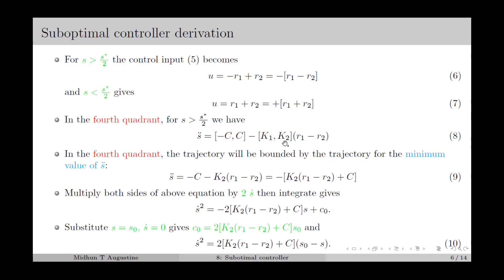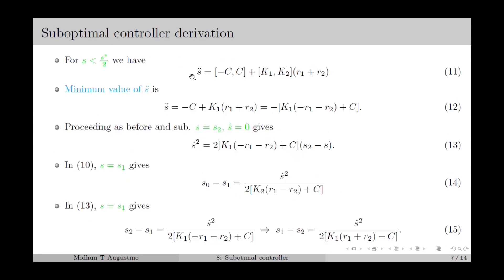Here C, K1, and K2 are the bounds of the uncertainties as defined in the previous lecture. Multiplying both sides of this equation by 2·s-dot and integrating and rearranging, we obtain s-dot-squared as in equation number 10. For S less than S-star over 2, s-double-dot is as in equation number 11, and the state trajectory is bounded by the minimum value of s-double-dot given in equation number 12. Proceeding as before, we obtain s-dot-squared as in equation number 13. Substituting S equal to S1 in equations 10 and 13, we obtain S0 minus S1 as in equation 14 and S2 minus S1 as in equation 15.